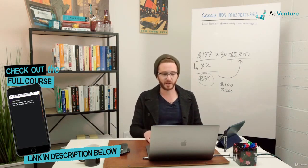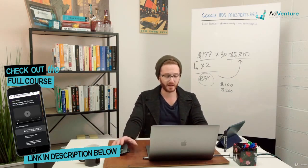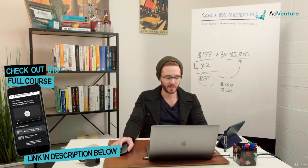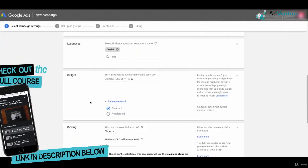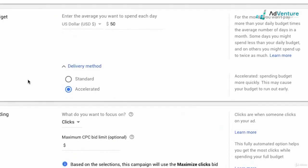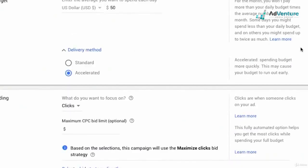That's the advanced delivery method settings. Let's quickly jump back into Google Ads and select our settings, the ones that we want to use. Back in Google Ads, I'm going to click accelerated. Google gives us this little notification: spending budget more quickly, this may cause your budget to run out early. Yes, we know that, but it's still what we would like to do.